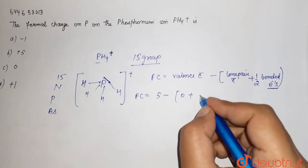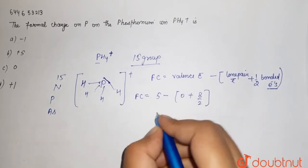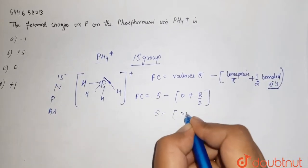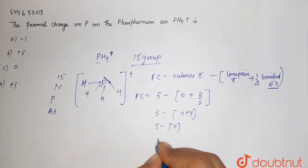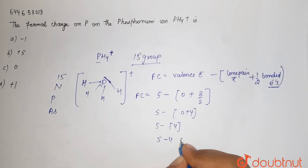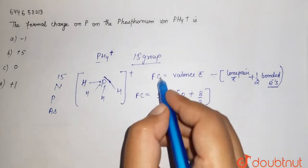It is 5 minus 0 plus 4, so 5 minus 4, which comes out to be 1. So we get to know that the formal charge on phosphorus is plus 1.